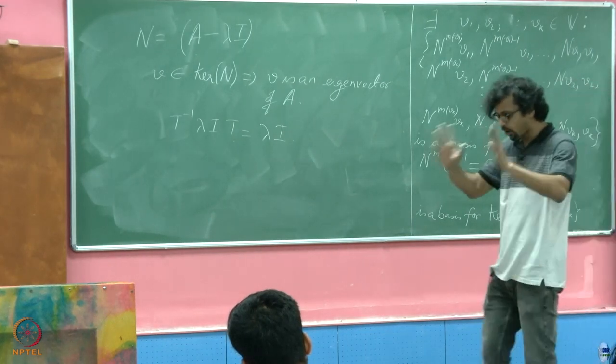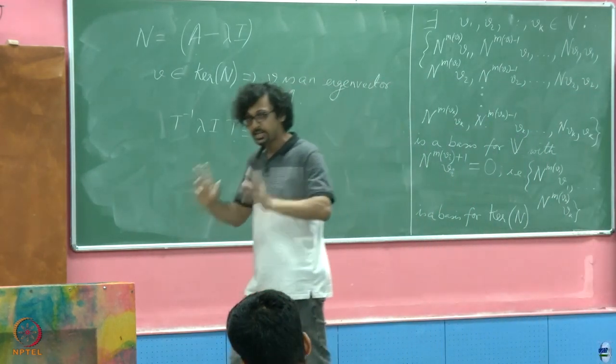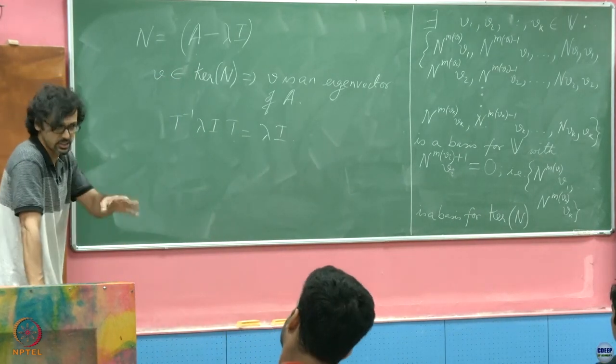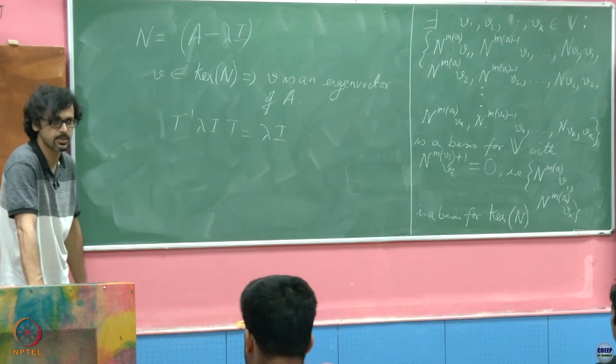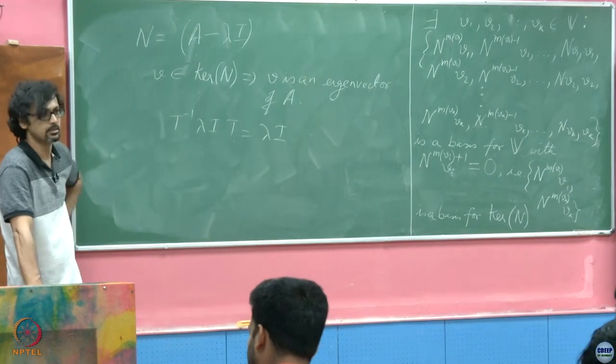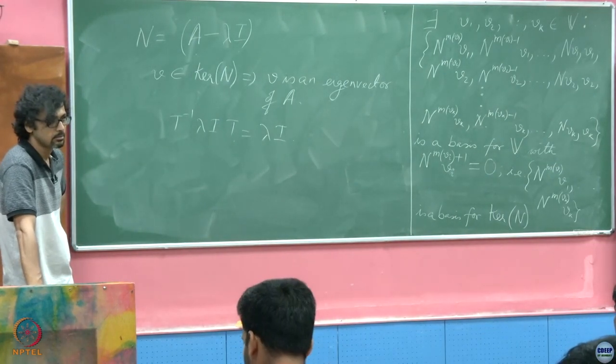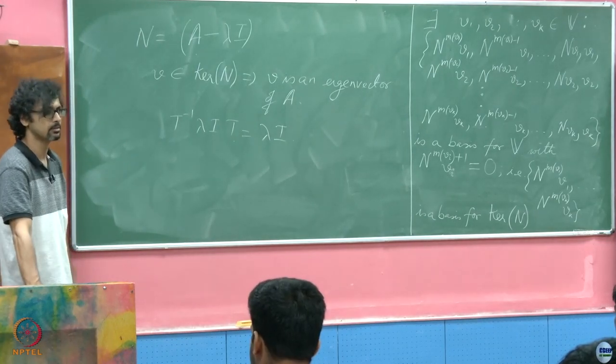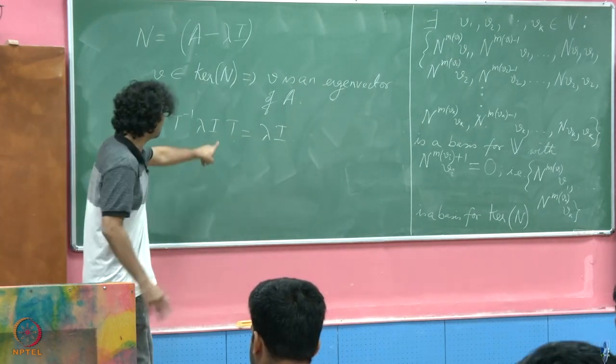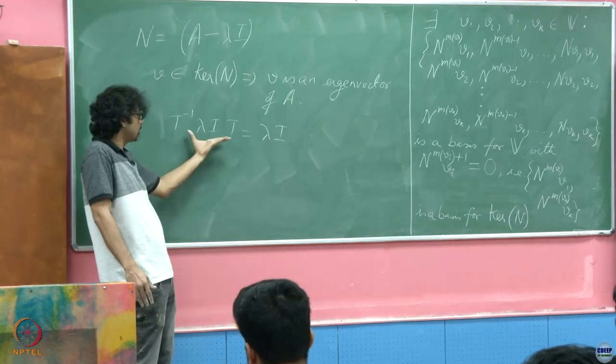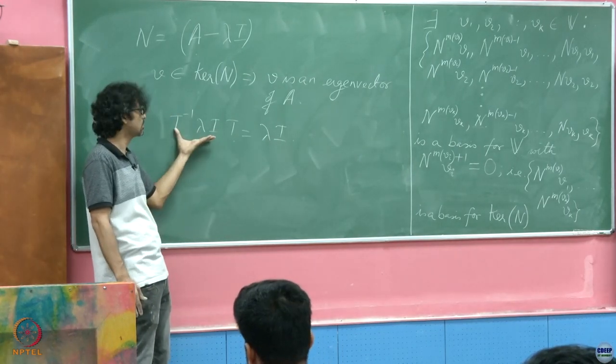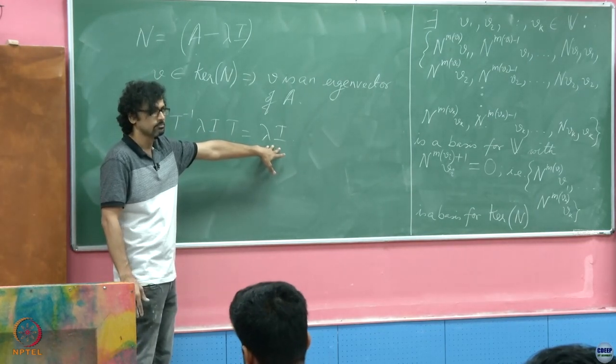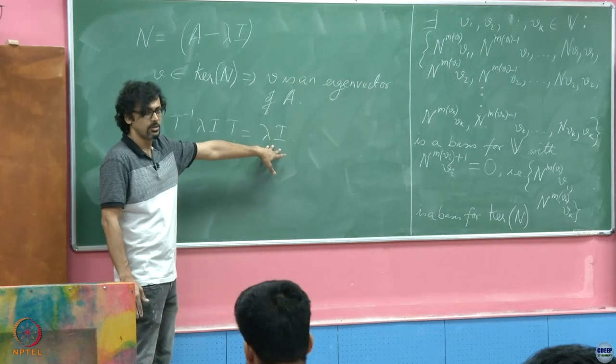Consider the family of all matrices on an n dimensional vector space, n cross n and operators on n dimensional vector space. All these eigenvalues are repeated. How many matrices in such a family will be diagonalizable? It is only one. Because you hit it with any similarity transformation, any change of basis, it will still remain that just the diagonal fellow. You see what I mean?